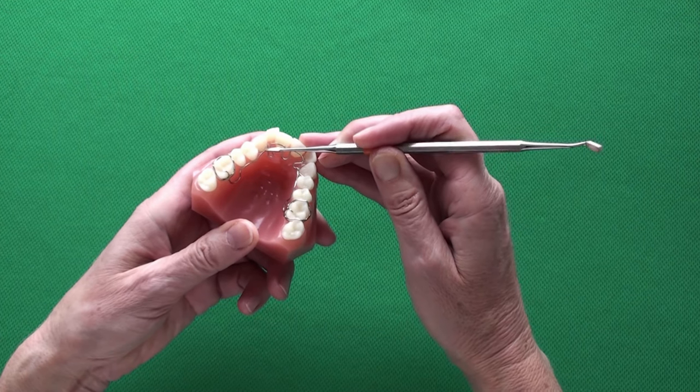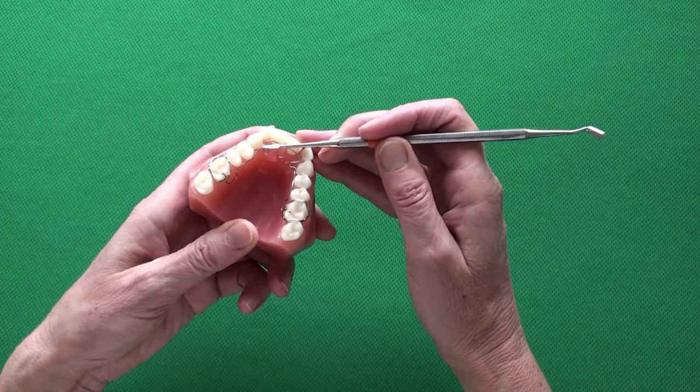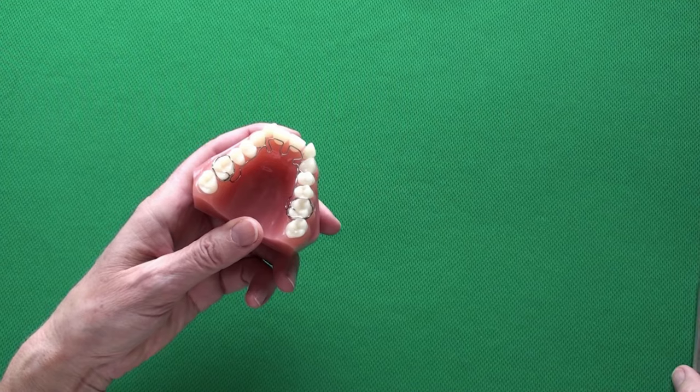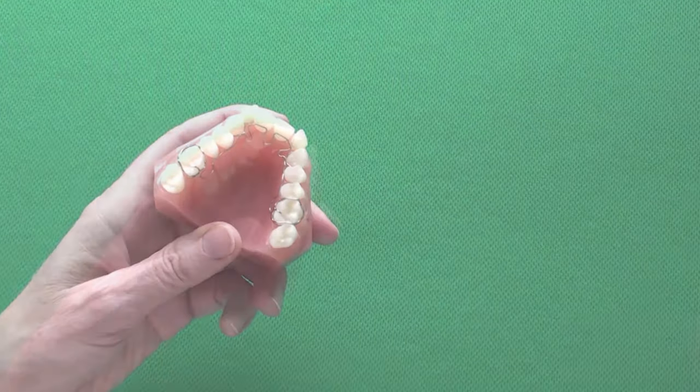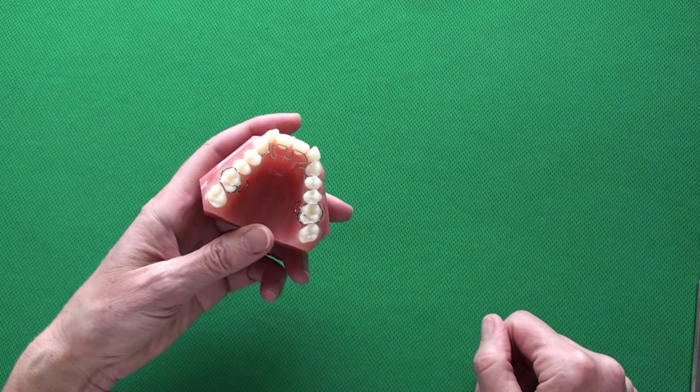If not, use an instrument. Stabilize it against the canine and pull the wire lingual and apical until it snaps in place. If needed, do this on both sides.